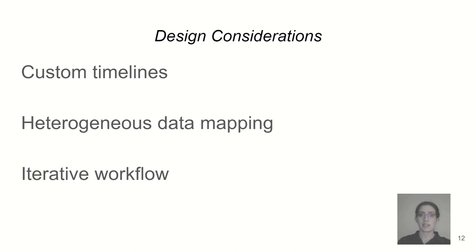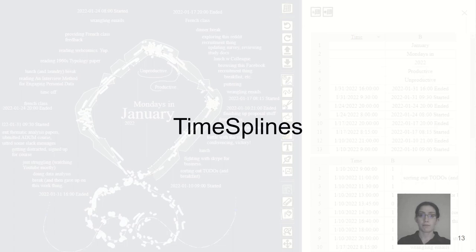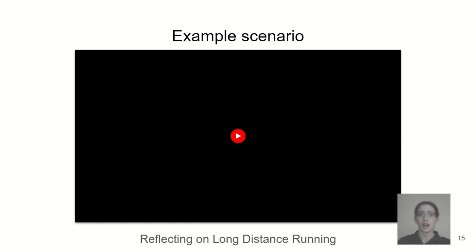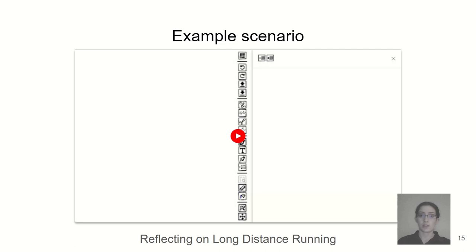In response, we built Timesplines. Timesplines has two main views: the canvas on the left where we manipulate visuals, and the data drawer on the right where you can load in multiple datasets, with the toolbars in between. I'm going to go through a quick example of a fictional scenario showing a person using the system to visualize running data.